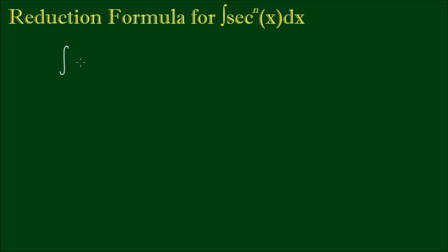Let's derive a reduction formula for the integral of the powers of sec x with respect to x. This reduction formula will be of most use when dealing with odd powers of sec x. Integrals of even powers of sec x are relatively straightforward compared to odd powers, but you can use it for even powers as well. Let's call this integral i sub n, n for the nth power.